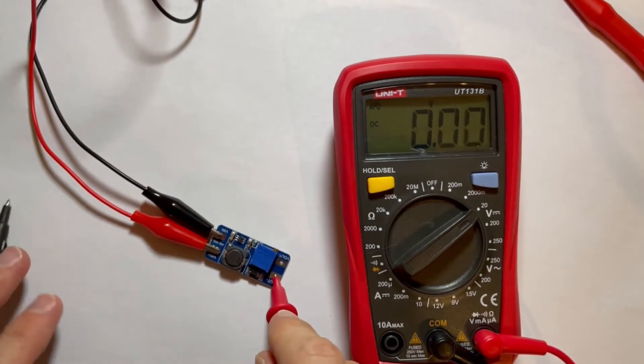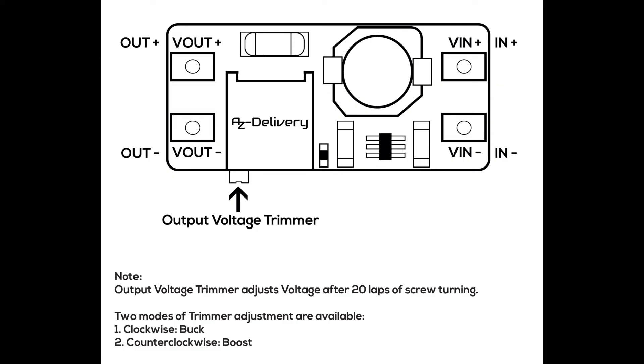So let's see what the datasheet says. And as you can read easily here, the output voltage trimmer is pointed to with an arrow, and it says as a note: output voltage trimmer adjusts voltage after 20 laps of screw turning. So I just didn't turn it enough. And then we read, if you want to have a buck effect, you turn clockwise. Buck means stepping the voltage down. But if you want to have a boost effect, stepping the voltage up, you turn counterclockwise.